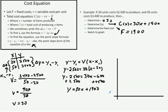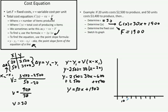Now, if we wanted to sketch this graph, we have to be careful about choosing units along the X and Y axes. The slope of 30 means every unit increase in X adds 30 to cost — going by ones would be too small. So we'll go by 10s along the X-axis: 10, 20, 30, and so on up to 50, 60, 70, etc.